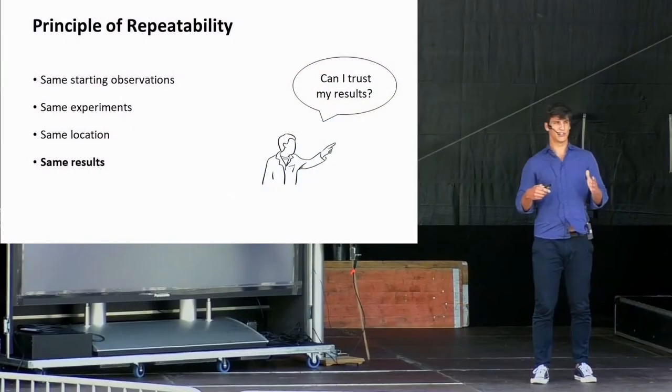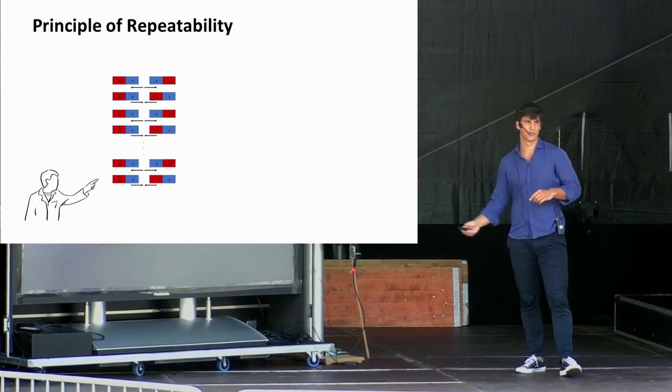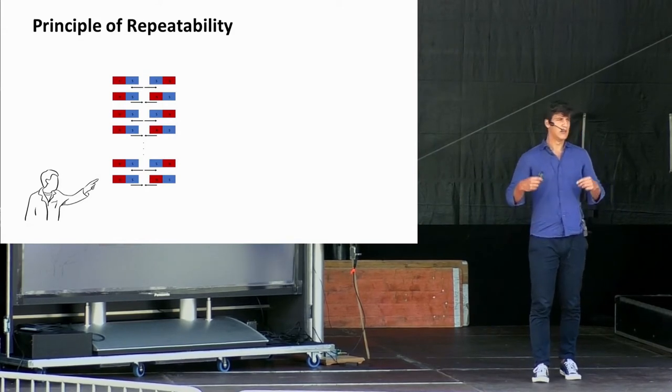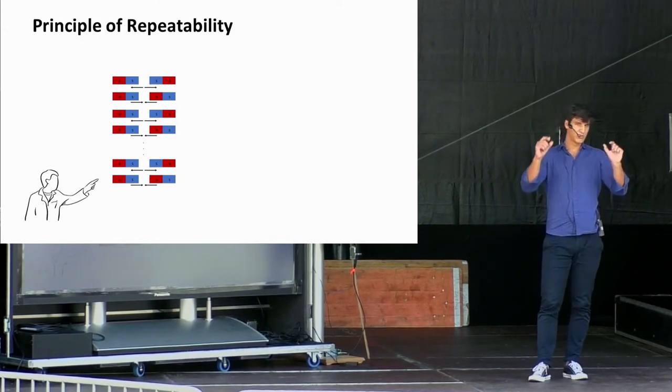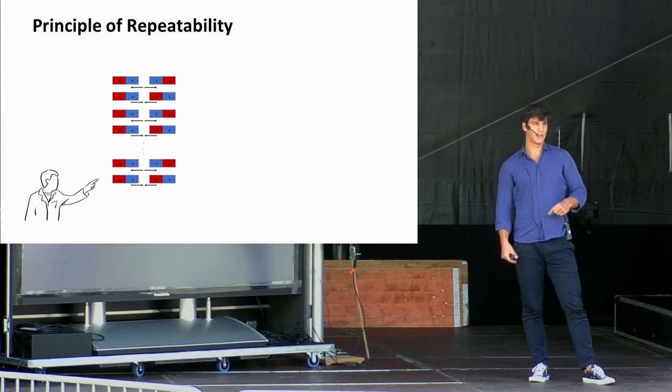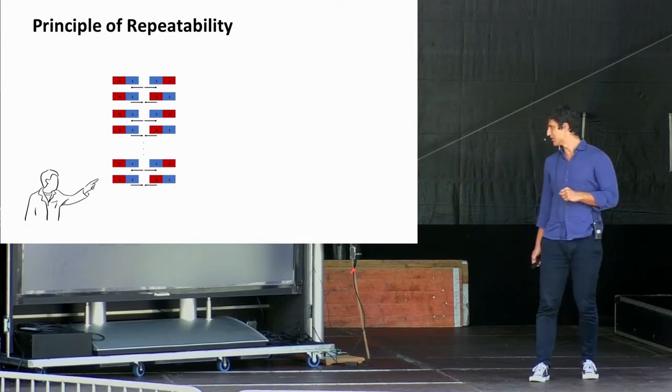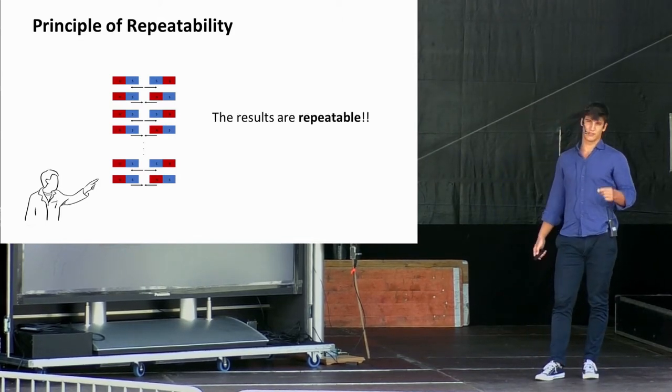Repeatability ensures that you, as a scientist, can trust your own results. Let me once again go back to the example of our magnet. A scientist would be interested to take two magnets and keep on putting them close together, in order to observe whether they attract or repulse each other based on their orientation. If this happens, the theory and the results are repeatable.